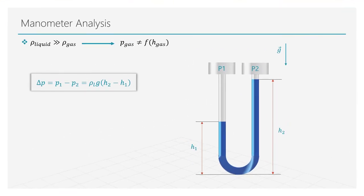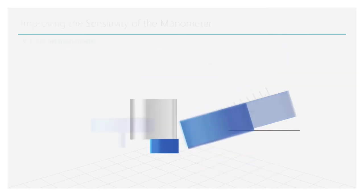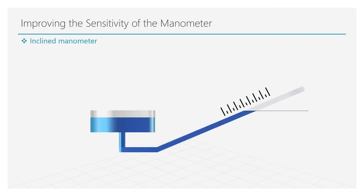There are multiple ways to improve the sensitivity of a manometer. One approach is to use an inclined manometer. In this configuration, the fluid covers a longer distance along the tube for the same vertical height change, allowing smaller variations of pressure to be visualized.